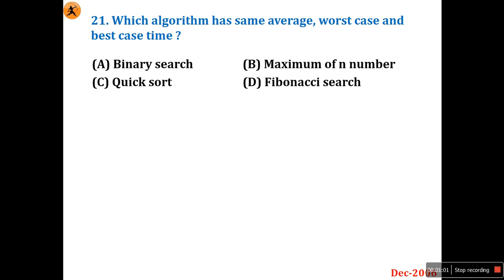This is a tricky question if you don't understand what is being asked, otherwise it's simple. For binary search, the best case is O(1) and the worst case is O(log n), so obviously they are different. For quicksort, if the input is already in sorted order it takes O(n²), but in average and best case it is O(n log n) — that is also different.